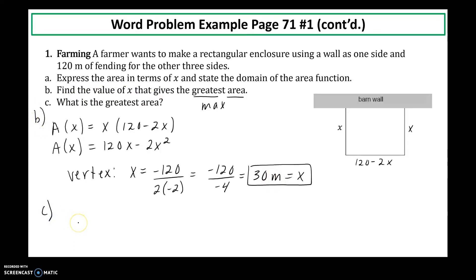But now when I go to find part c, what is the greatest area? So how do I find the area? I plug it back into my area function. So the area when x is equal to 30. And I'm going to plug it into my factored form. Minus 2 times 30. So I get 30 times 120 minus 60 will give me another 60. So my greatest area would be 1,800 square meters.